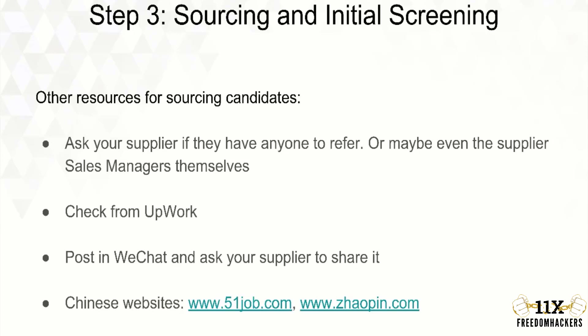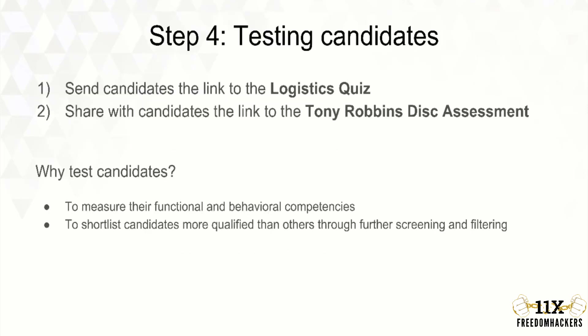You might also want to create a post on WeChat and ask your supplier to share that post — that way you will get more reach and be able to utilize the network your supplier has. Another website is Upwork — there are Chinese people there as well, but you need to do due diligence to make sure the candidate is good. At this point in step three, you're only sourcing for candidates, so it doesn't really matter which websites or methods you use because right now it's just about creating a pool of candidates. Once you have the candidates, it's time to test them.